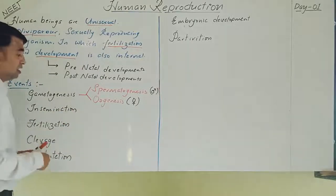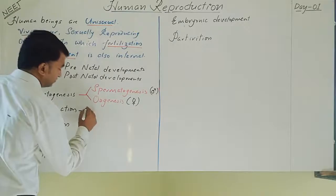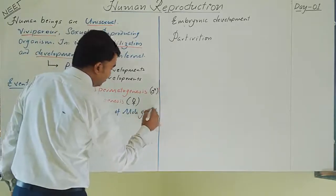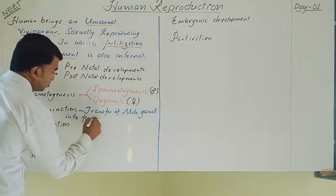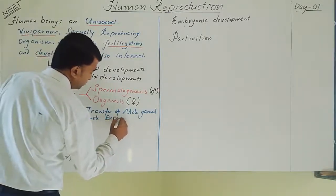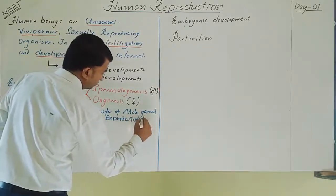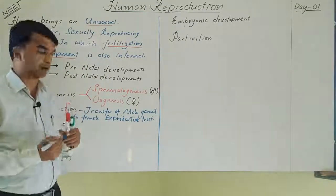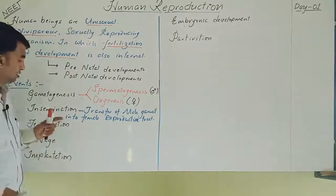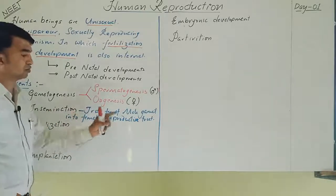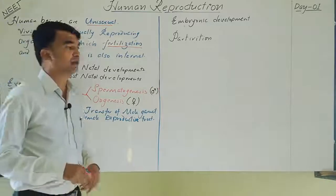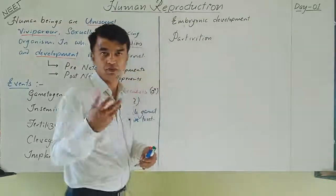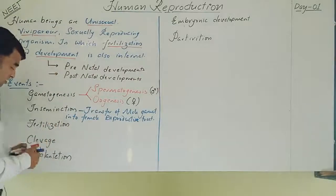Insemination means the transfer of male gametes into the female reproductive tract. This is similar to pollination in flowering plants — it is the special act where, under the copulatory act, the male gametes are transferred to the female reproductive tract. The male gametes are motile and very small; the female gamete is larger and present inside.